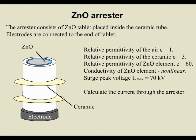Zinc Oxide Arrestor. The arrestor consists of a zinc oxide tablet placed inside a ceramic tube. Electrodes are connected to the end of the tablet. Relative permittivity of air: 1. Relative permittivity of ceramic: 3. Relative permittivity of the zinc oxide element: 60. Conductivity of the zinc oxide element: non-linear. Surge peak voltage: 70 kV. Calculate the current through the arrestor.